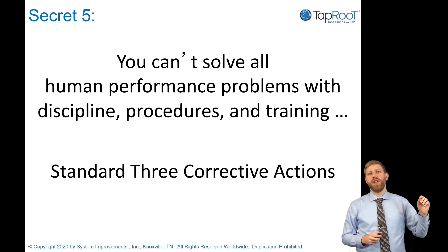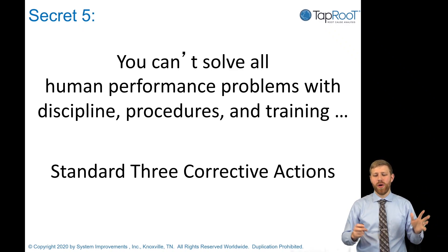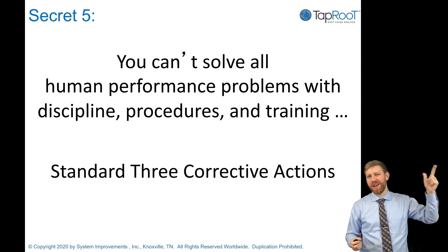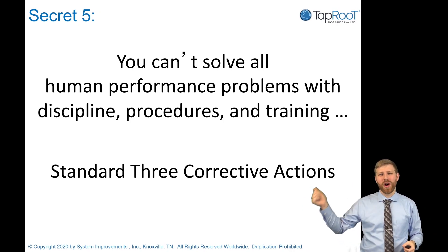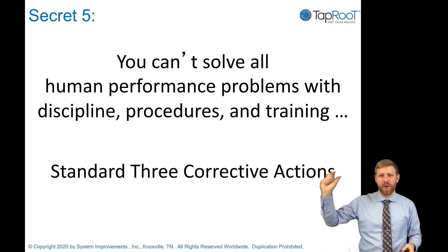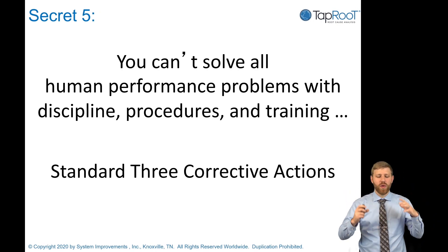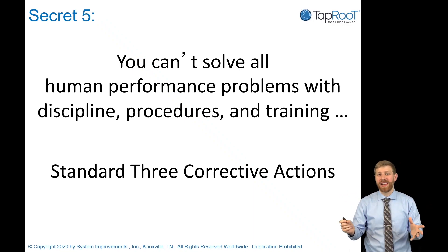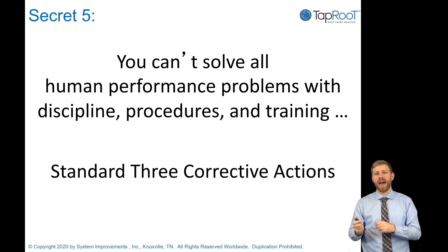Secret number five: you can't solve all human performance problems with discipline, procedures, and training. In every course I've taught, people always come up with those three. We always ask: if it didn't work the first time when we disciplined, retrained, and wrote a longer procedure, why do we think it's going to work this time? These are the defaults everyone goes to. We want to give people a tool to break out of those and dig deeper — not do the same three things again and again and expect different results.